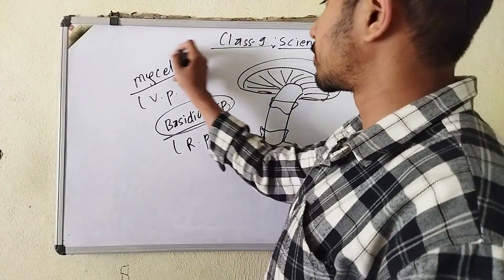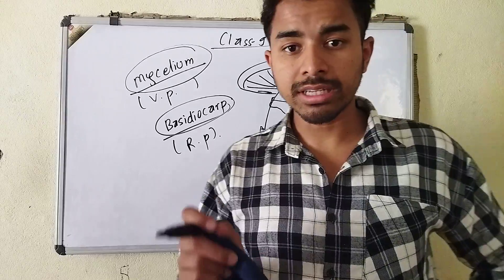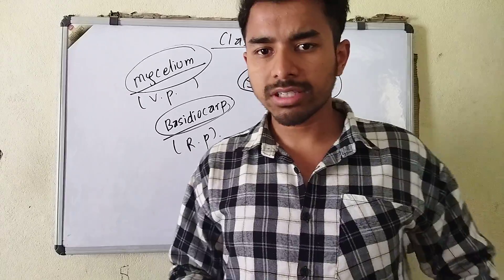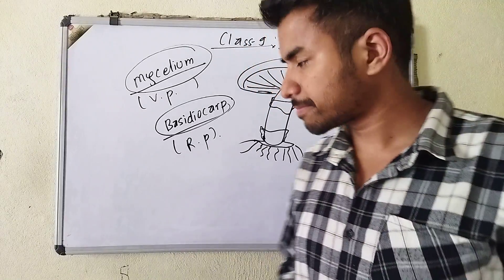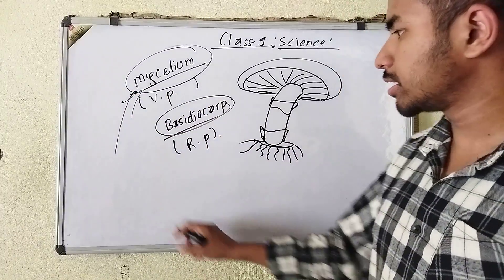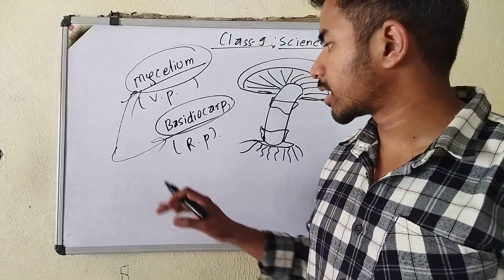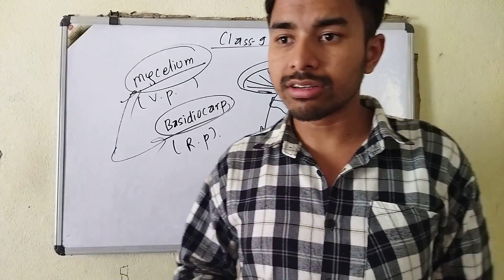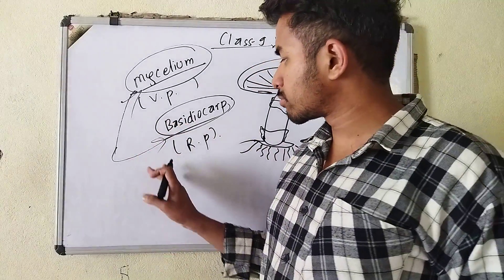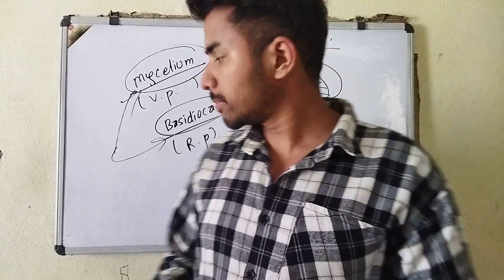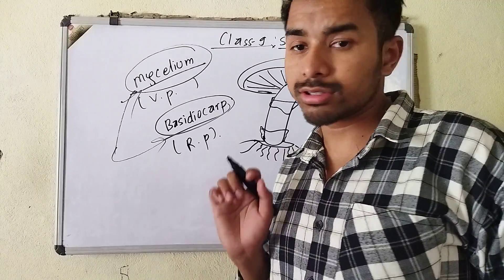The first part is mycelium and the next part is the basidiocarp. The vegetative part and the reproductive part — the vegetative part is such parts which help in absorbing minerals and food. Food is synthesized and used for survival. This is the reproductive part. The vegetative part of the mushroom just lies below the soil.